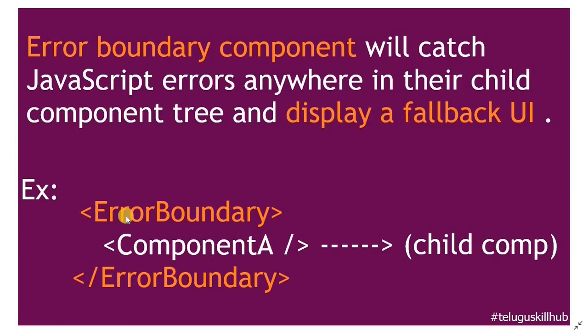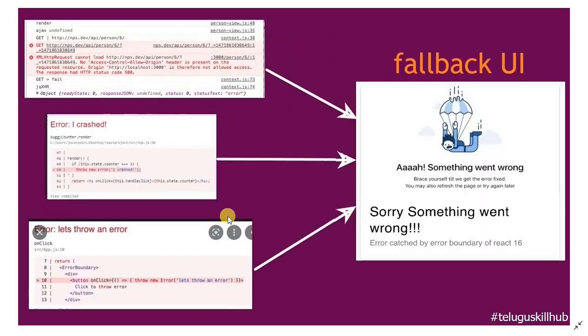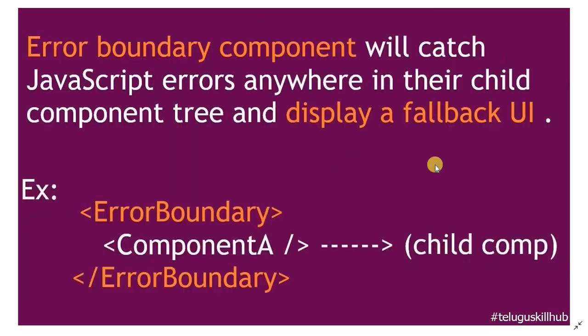These specific error boundaries can handle the error. Because of the fallback UI, we will show the fallback UI. I will return the fallback UI and that will be shown in the UI.